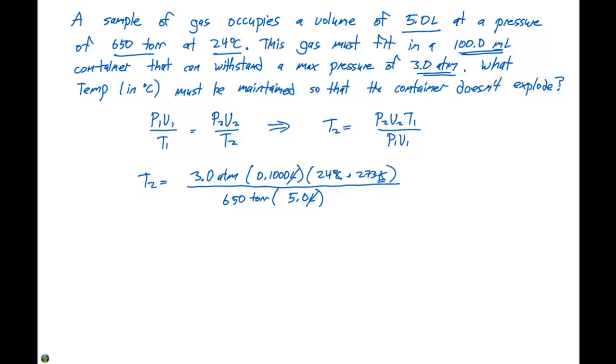And now here we have 3.0 atmospheres divided by 650 Torr. So we need to convert one or the other. So why don't we convert this atmospheres over to Torr, where we know that one atmosphere is equal to 760 Torr. So the atmosphere units cancel, and we're left with Torr here in the numerator and also Torr in the denominator. So they are going to cancel with each other.